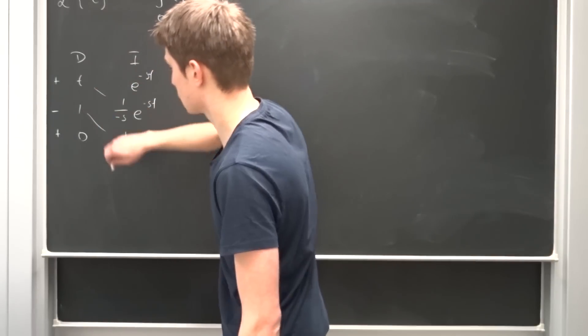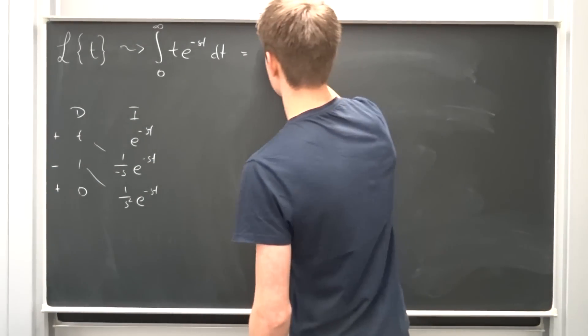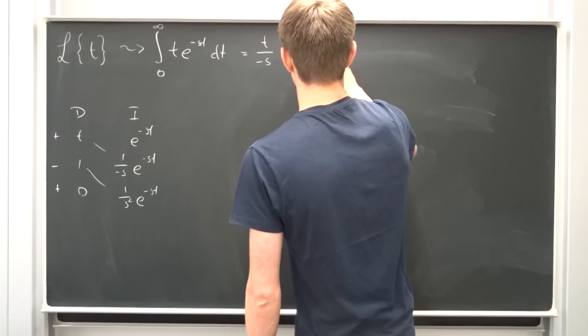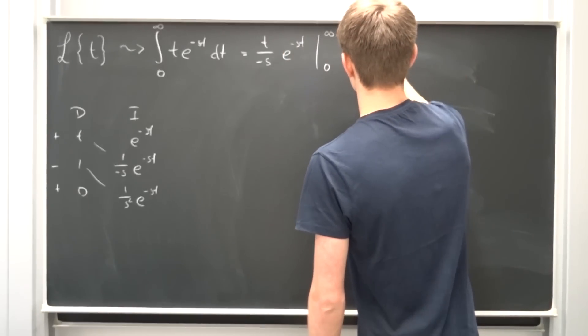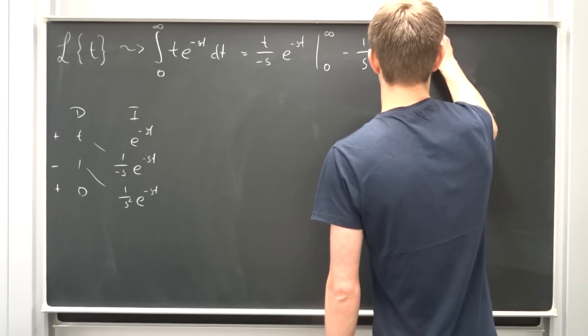So multiply this together and this together and then we are done. Multiply the limits. So this is finally just t over minus s e to the minus st from 0 to infinity, minus 1 over s squared e to the minus st from 0 to infinity.